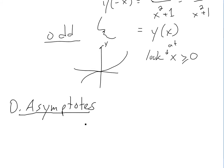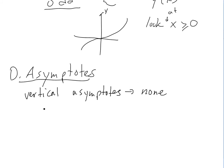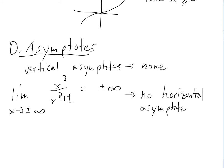For part D, asymptotes: there are no vertical asymptotes because f(x) is defined everywhere — there's no x value where it's undefined. For horizontal asymptotes, as x approaches plus or minus infinity, x³ over x² + 1 diverges since the numerator has a higher degree, so there are no horizontal asymptotes either.